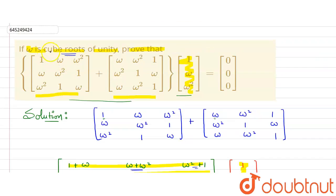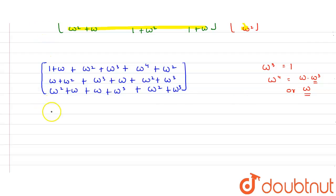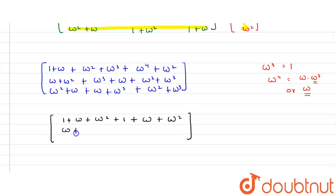As discussed, omega is the cube root of unity. This means omega cubed equals one. Also, omega to the power four equals omega multiplied by omega cubed, which equals omega, since omega cubed is one. Substituting: one plus omega plus omega squared, and replacing omega cubed with one and omega to the power four with omega, we get one plus omega plus omega squared again for the second row.